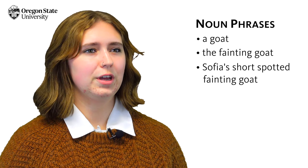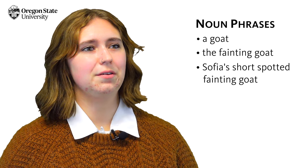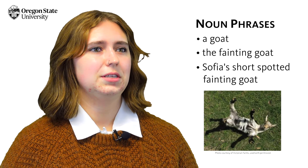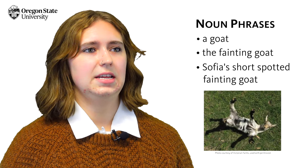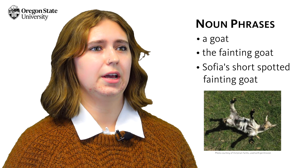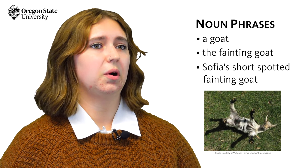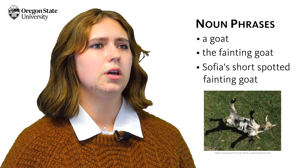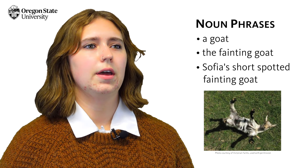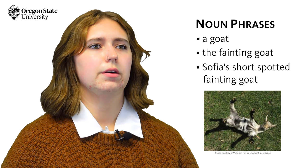There are noun phrases, for example: a goat, the fainting goat, Sophia's short spotted fainting goat. In each case the noun is the main idea — goat — and all the other words describe it, telling us which goat or what kind of goat. But there's no predicating verb to go with it, so we know it's only a phrase.